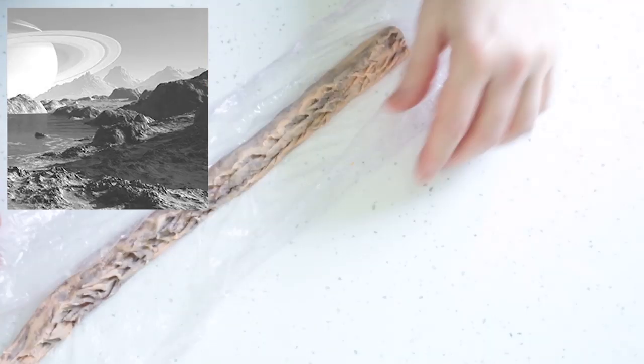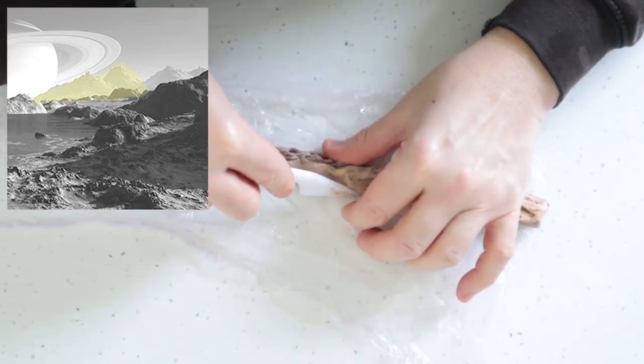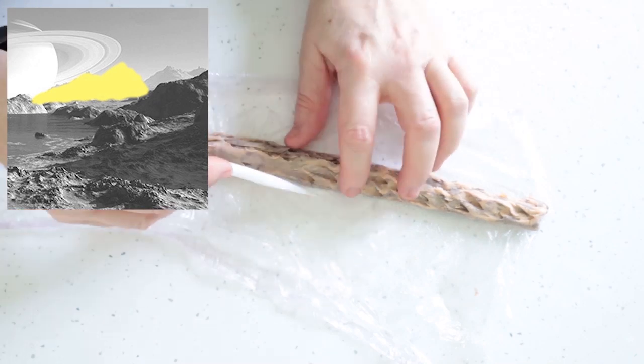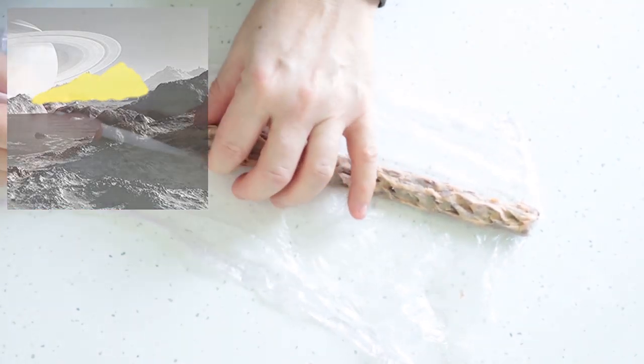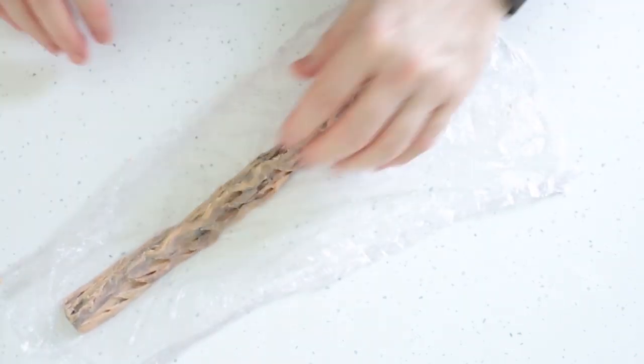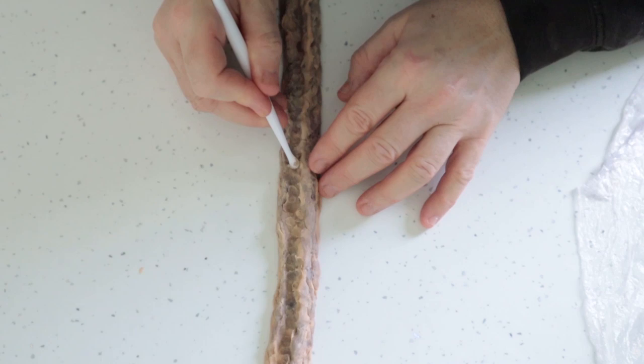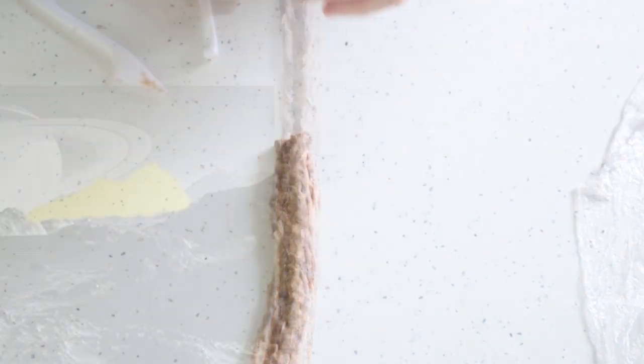And then using the same method but just a different color soap dough I'm going to create the rocks that are at the back of the picture just below Saturn. The only difference this time being I'm just going to make an impression all the way along down the center so that I've got two peaks on this rock formation.